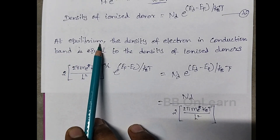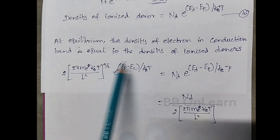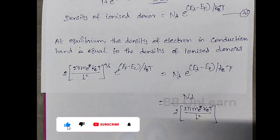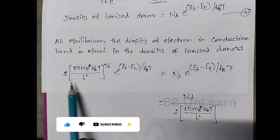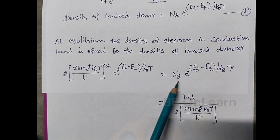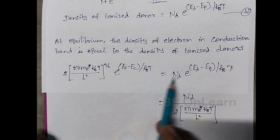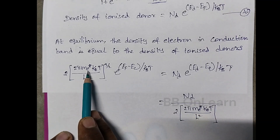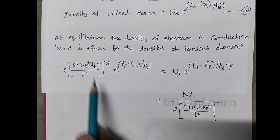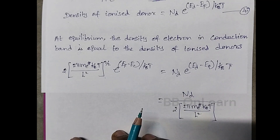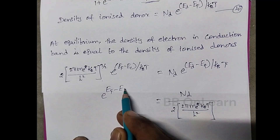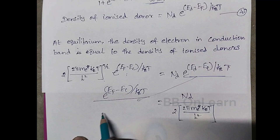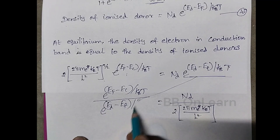At the particular equilibrium position, the density of electrons in the conduction band equals the density of ionized donors. That is, equation one equals equation four at equilibrium. So the concentration of electrons in the conduction band equals ND times e to the power (ED minus EF) / kT. We then modify and rearrange to solve: EF / kBT terms give us (EF minus EC) / kBT equals (ED minus EC) / kBT.